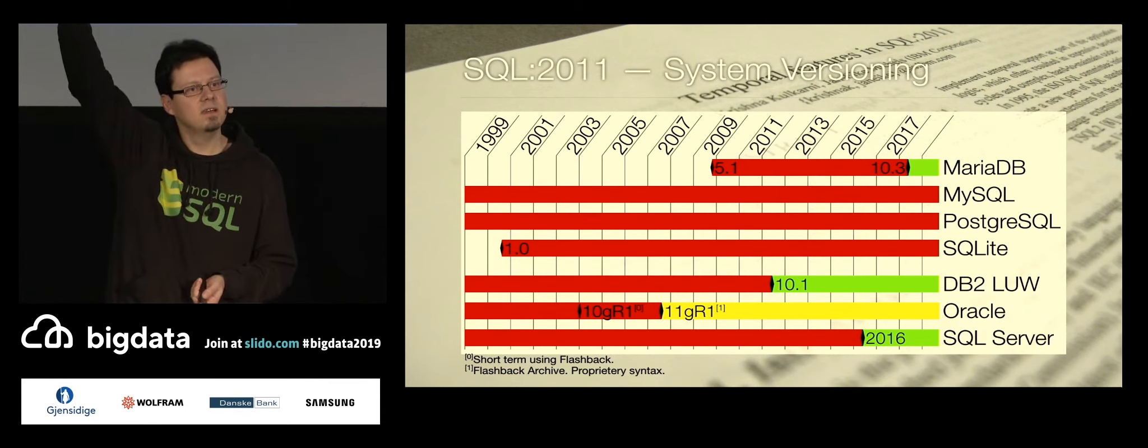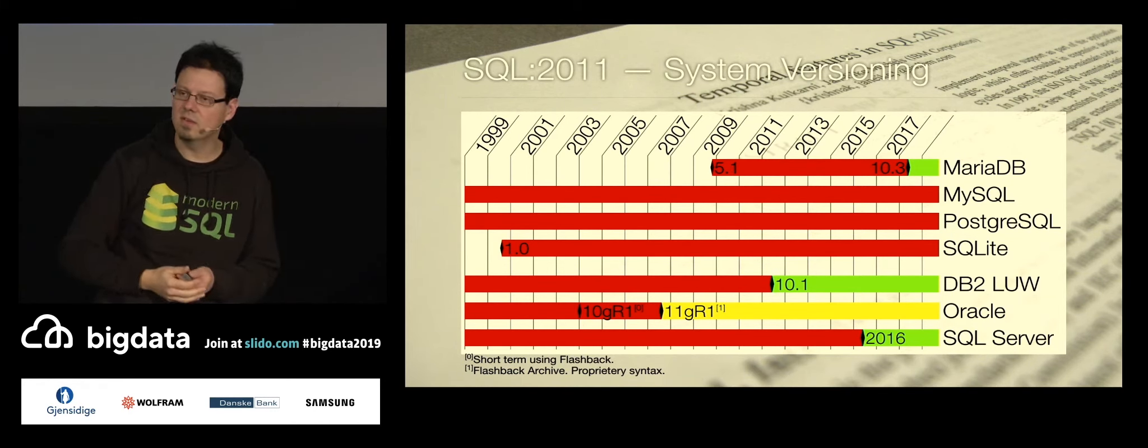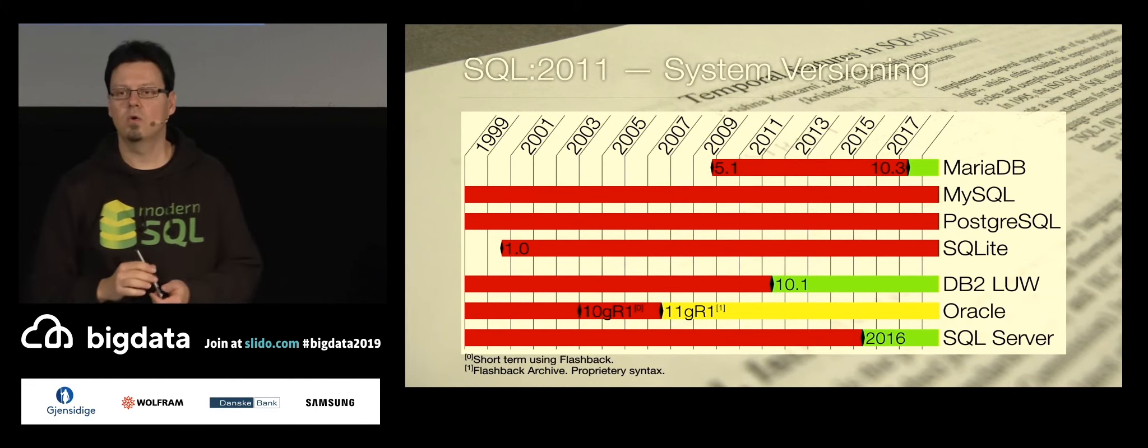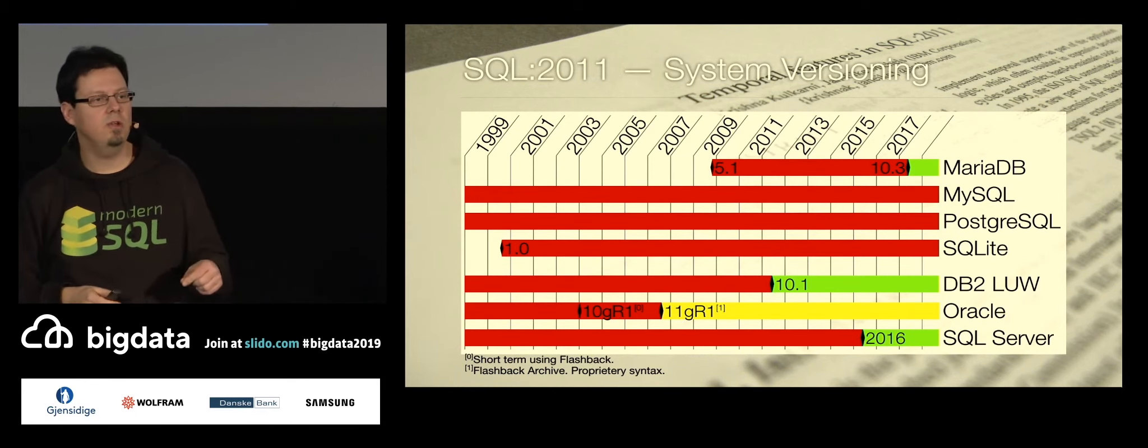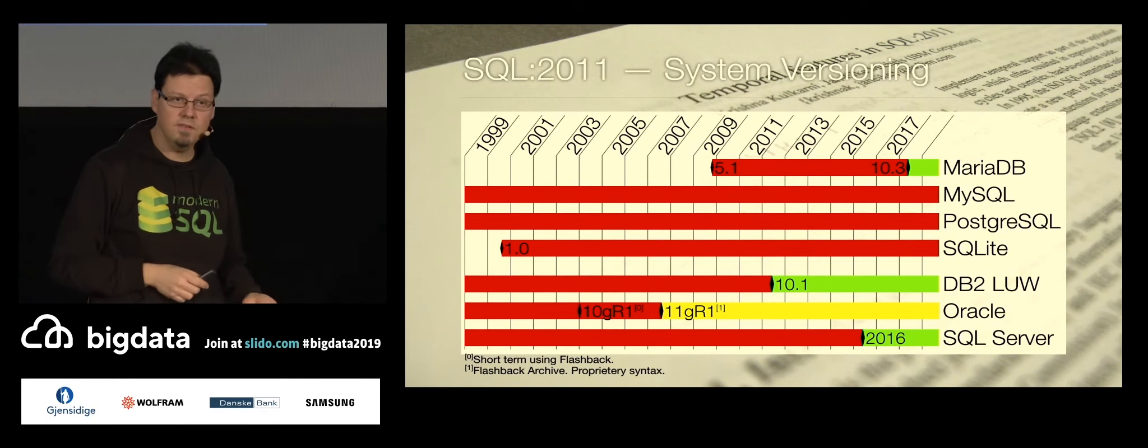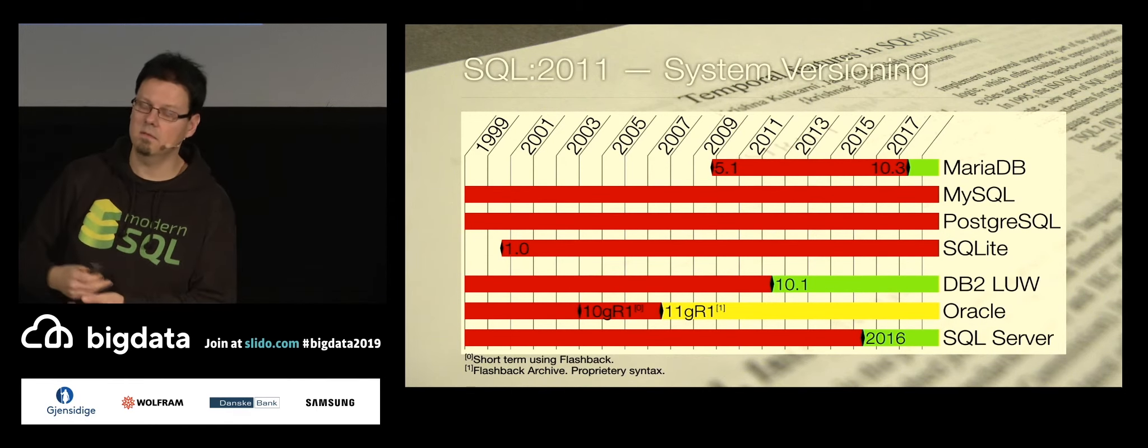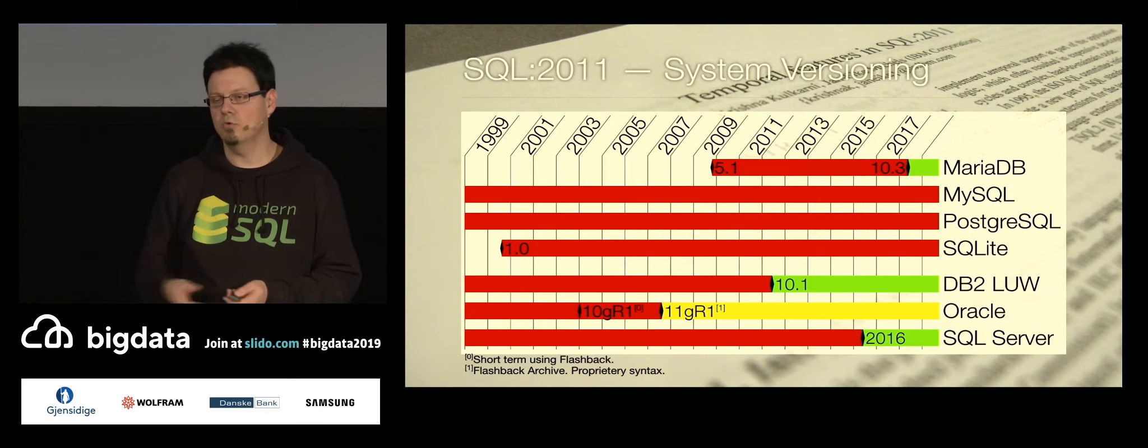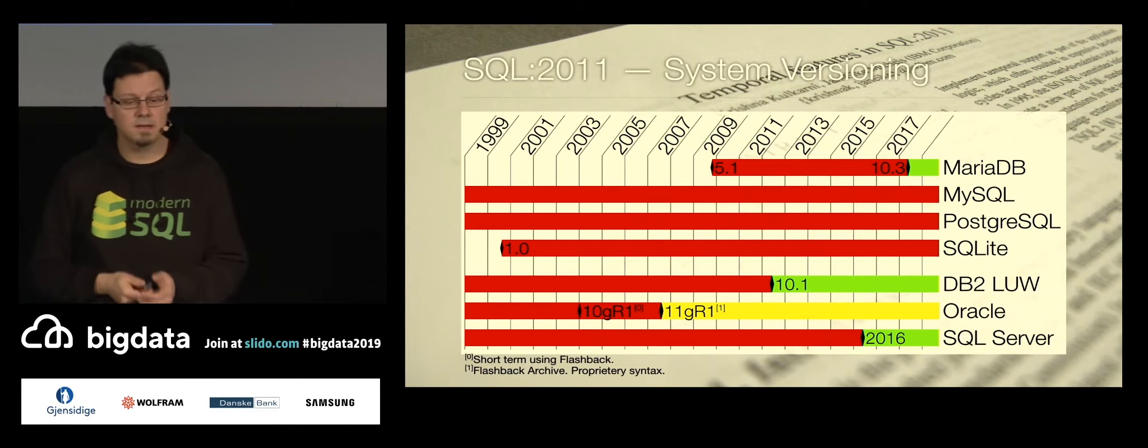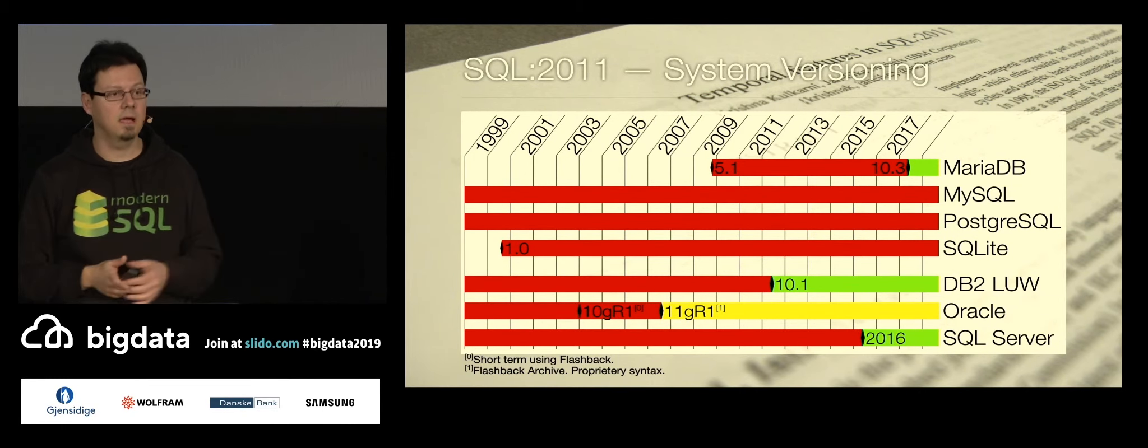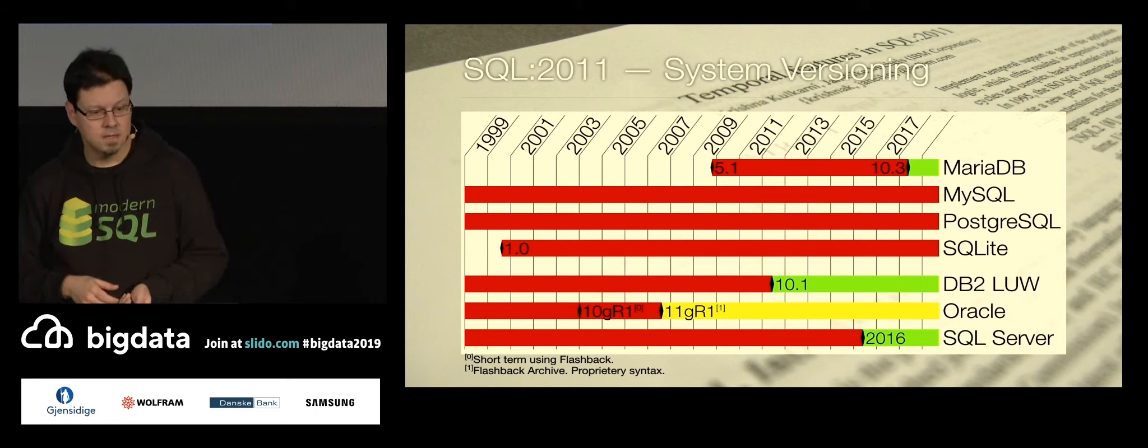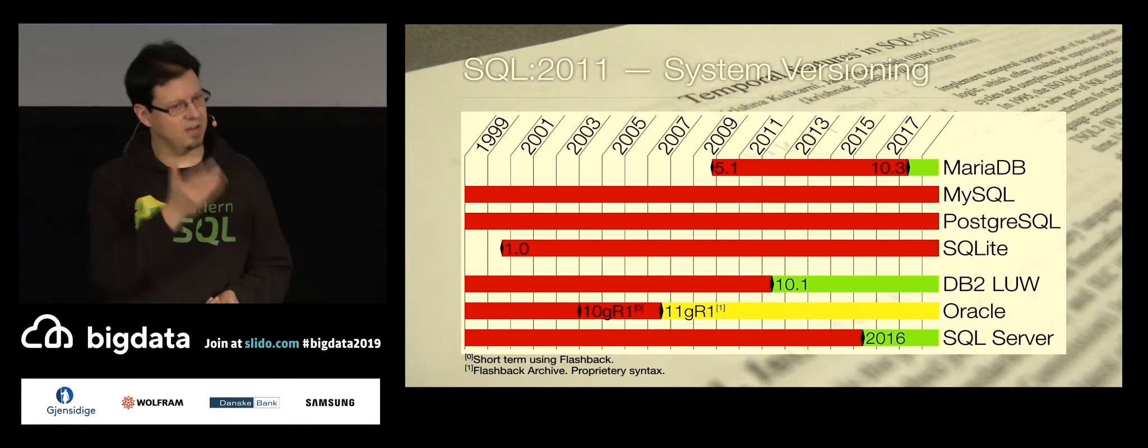So the commercial databases have that for quite some while in the meanwhile. The open source, well, MariaDB. Who is using MariaDB? Not so many. Ah, a few. So you could use that if you are using 10.3 or more recent. MariaDB has even started to introduce the application versioning features in this year's release, but it's quite incomplete. So I think it will need one or two more releases until it is usable. But it's coming. The other vendors are thinking about it as well.